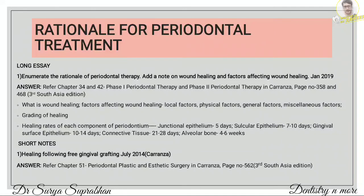Moving on to the rationale for periodontal treatment. Enumerate the rationale of periodontal therapy and add a note on wound healing and factors affecting wound healing. For the rationale, refer chapters 34 and 42, pages 358 and 468 in Carranza, covering phase 1 and phase 2 periodontal therapy. For wound healing, write what is wound healing and then factors affecting it — local factors, physical factors, general factors, and miscellaneous factors. Also write about grading of healing and healing rates of each component of the periodontium.